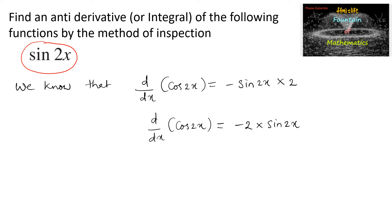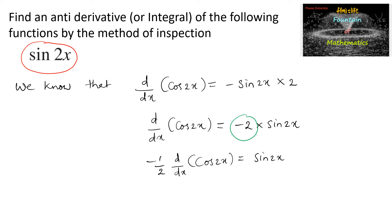Bringing minus 2 to the other side, we can write minus 1 by 2 times d by dx of cos 2x is equal to sine 2x. Or this can also be written as d by dx of minus 1 by 2 cos 2x is equal to sine 2x.